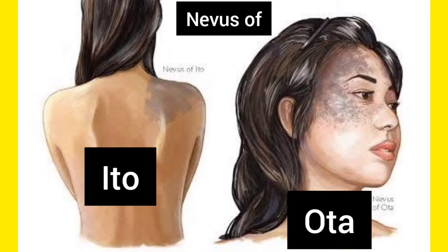You can remember: 'O' is just like a circle, and Ota occurs circularly around the eye. So Ota looks like 'O' — a circle — and it occurs circularly around the eye, as you can see in the right side picture.